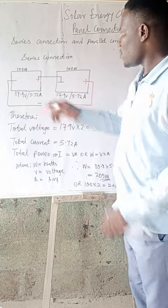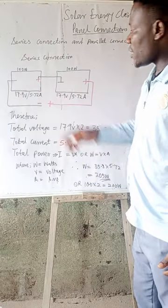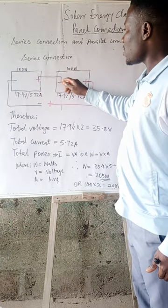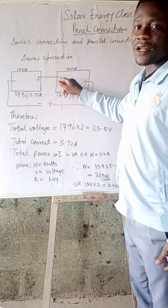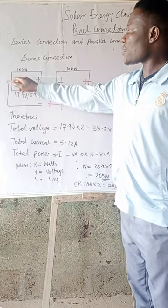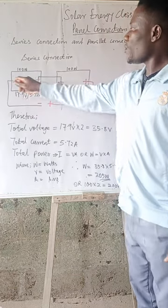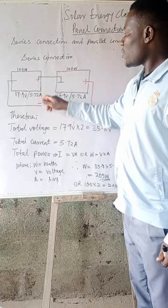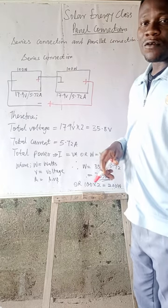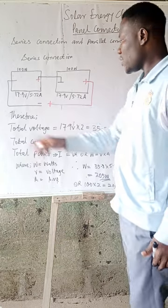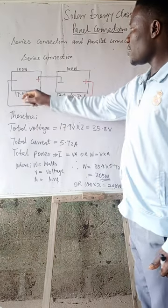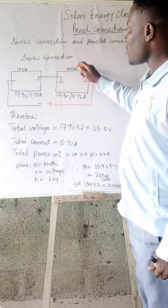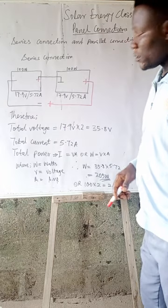Following what is on the board, you can see that when you connect this positive terminal to this negative terminal, you form a series connection, with the remaining terminals — this terminal and this terminal — being brought out. Looking at the result of what we have here, you can see the total voltage, the volt, and the amp.